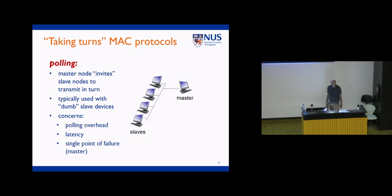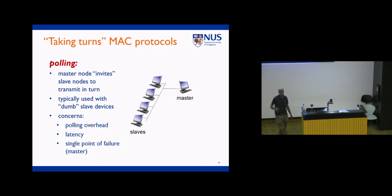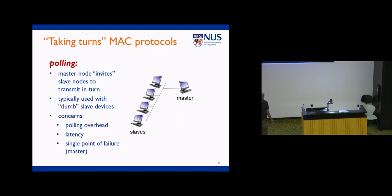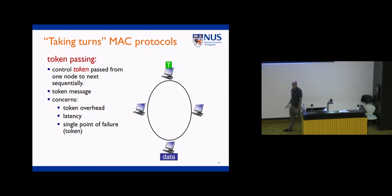The last thing we saw on Friday was taking turns protocols. There are two options broadly: polling and token ring. In polling, there's a master node that goes around to every node asking if it wants to send. In token ring, the topology is a circle and there's a special packet called the token — only one token in the network. If you have the token, you can send data. Once done, you pass the token to the next node.